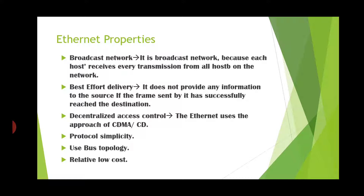Ethernet properties. First, broadcast network — it is a broadcast network because each host receives every transmission from all hosts on the network. Second, best-effort delivery — it does not provide any information to the source if the frame sent by it has successfully reached the destination. Third, decentralized access control — Ethernet uses the approach of CSMA/CD with protocol simplicity, bus topology, and relatively low cost. These are the properties of Ethernet.